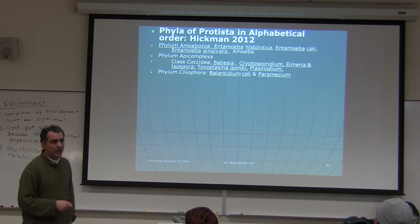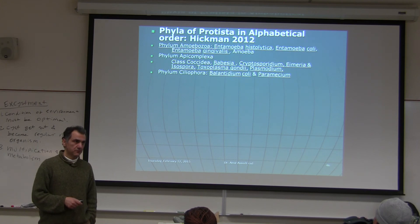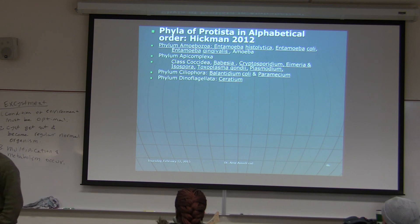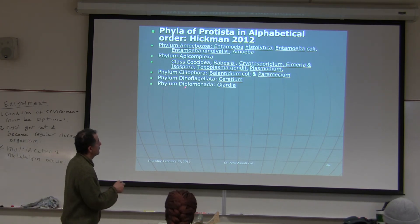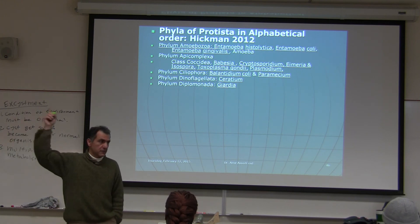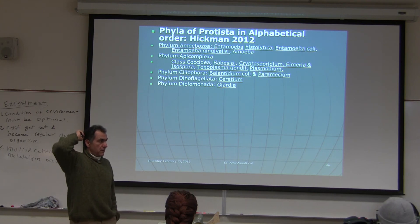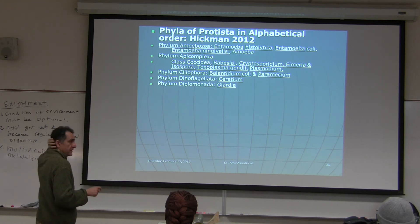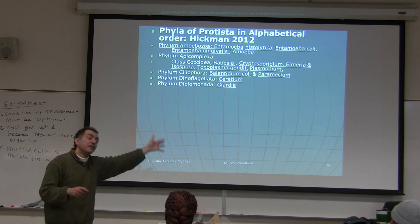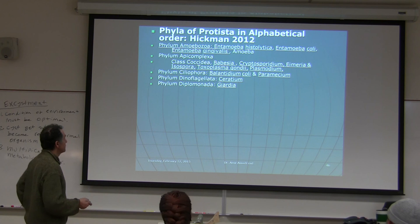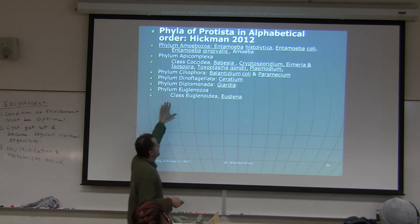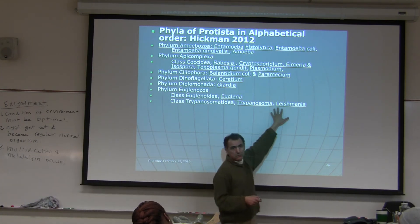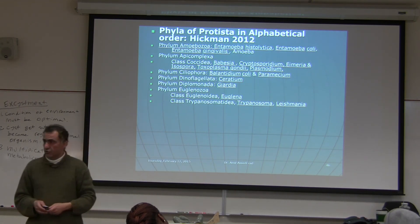Phylum Kinetoplastida/Euglenozoa: we have slides of Euglena, Trypanosoma, and Leishmania — both Trypanosoma and Leishmania kill millions of people each year. Phylum Diplomonada includes Giardia, which we have. Phylum Heterolobosea includes Naegleria fowleri. Trichomonas vaginalis, in Phylum Parabasalia, is the only protist I know that can be sexually transmitted — males often show no symptoms but females do.